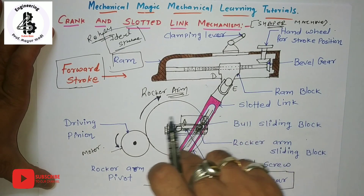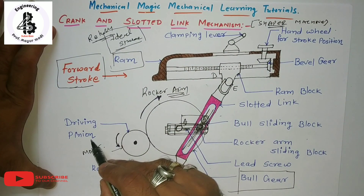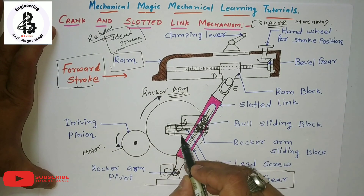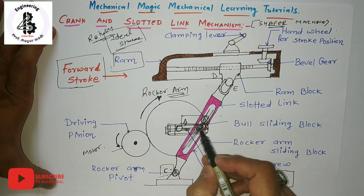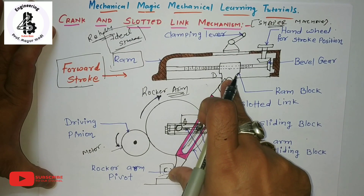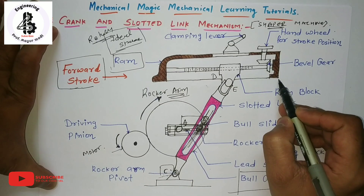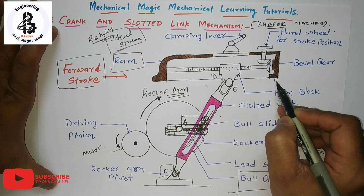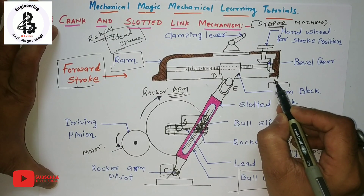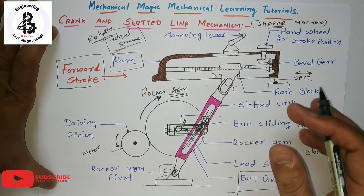Our intent is that the rotary motion should be converted into reciprocating motion. By the rotation of the driving pinion anticlockwise, the motion is transmitted to the bull gear in the clockwise direction via the A to B link. The B block reciprocates at the extreme positions, causing the C to D link and the ram to reciprocate. At the end of the ram, a single point cutting tool is attached, which also reciprocates for cutting of materials.